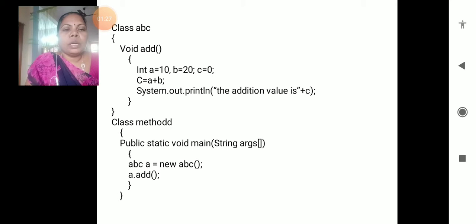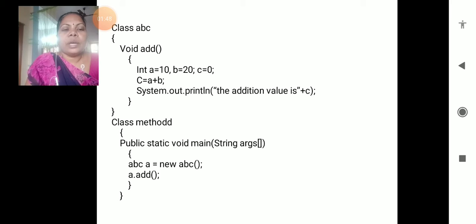But how is the method void add called with object creation? So here, class method: public static void main, then followed by the object creation - whatever class name you prepared in the previous class. The class name is ABC.